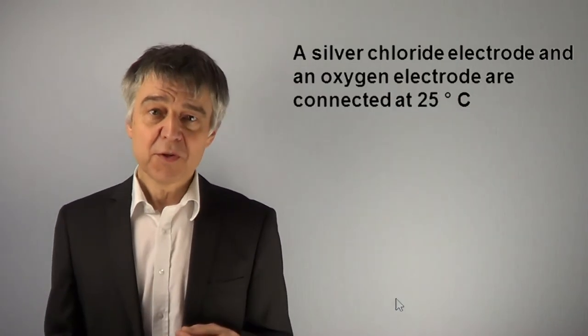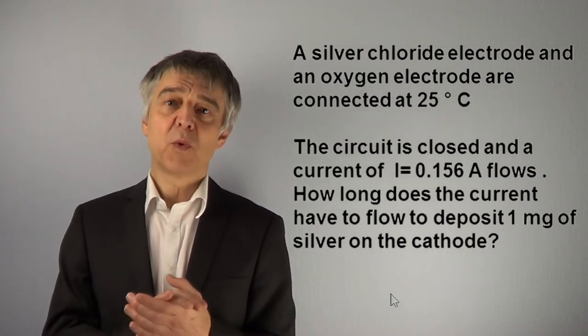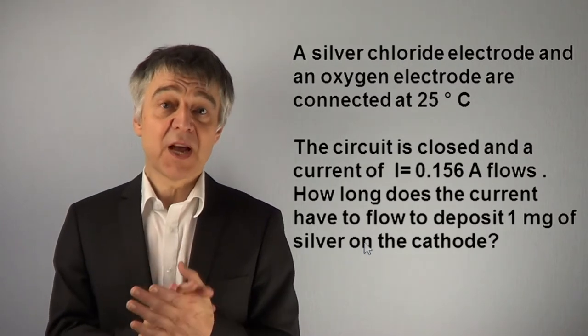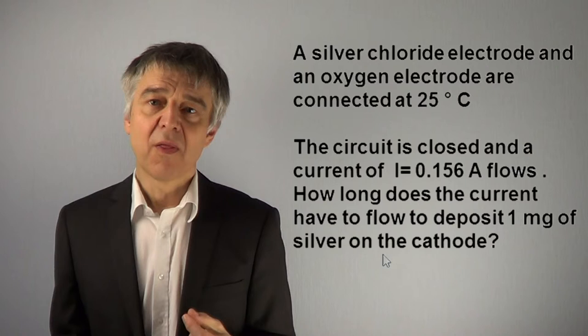The circuit is closed and a current of 0.156 Ampere flows. How long does the current have to flow to deposit 1 mg of silver on the cathode?